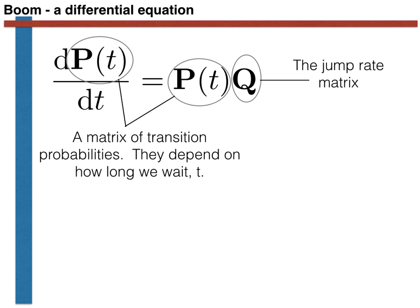For the time being though let's summarize our results and make a few observations. As promised I have arrived at a differential equation. It is called the Kolmogorov forward relationship and it relates the transition probabilities that depend on how long we wait P of T with the derivatives of this self-same matrix dP of T by dt. The matrix Q meanwhile is a matrix of limits that we call the jump rate matrix.